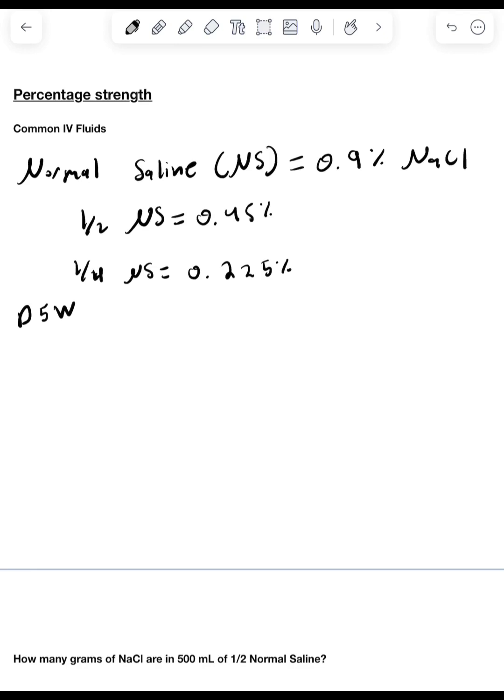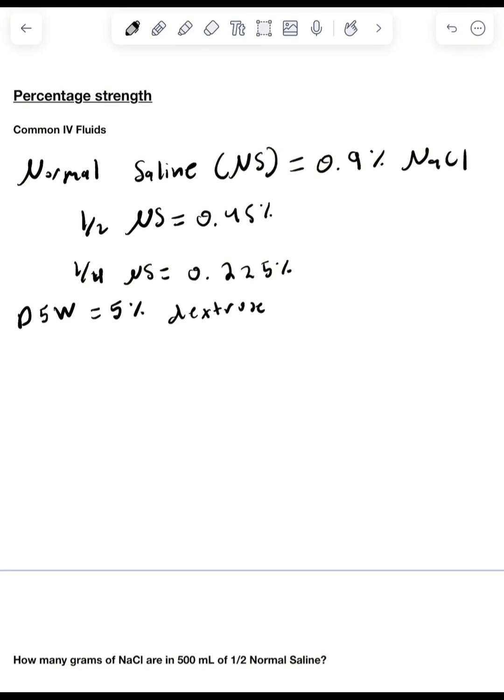Next we have D5W and this is equal to 5% dextrose. For your NAPLEX exam you'll see that things are measured in weight and volume as reviewed previously. W stands for weight which when we are solving percentage strengths we're going to be using grams and for volume we're going to be using mls.